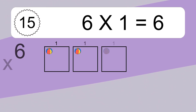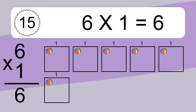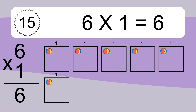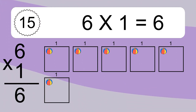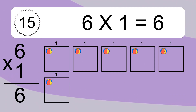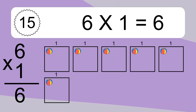6 times 1 equals what? 6 times 1 equals 6. We have 6 boxes and each box has 1 colorful ball inside. If you count all the balls in all the boxes together, you will have 6 times 1 balls. This equals 6 balls.